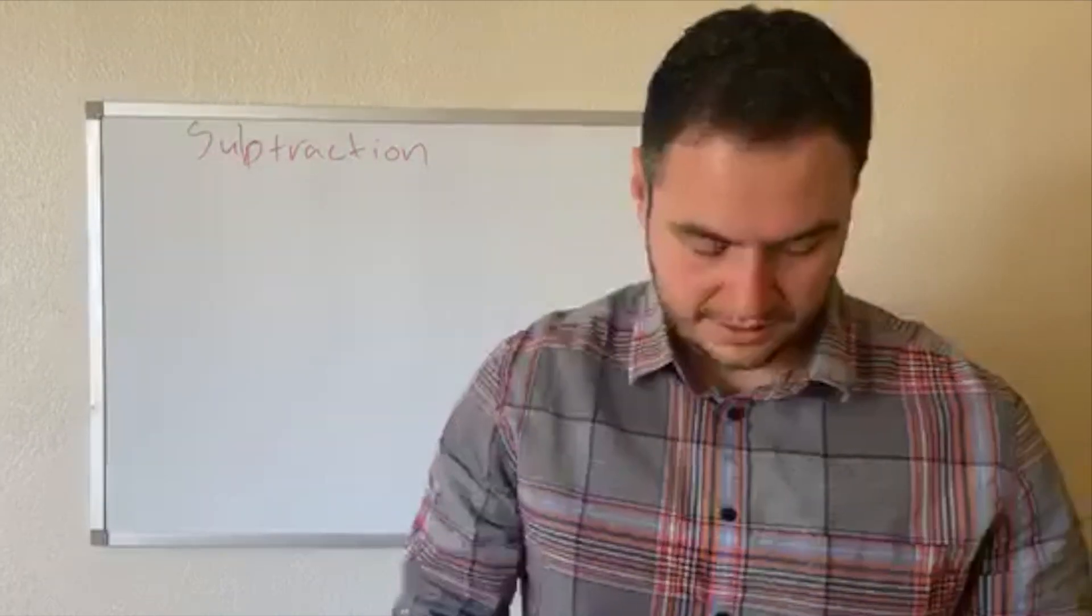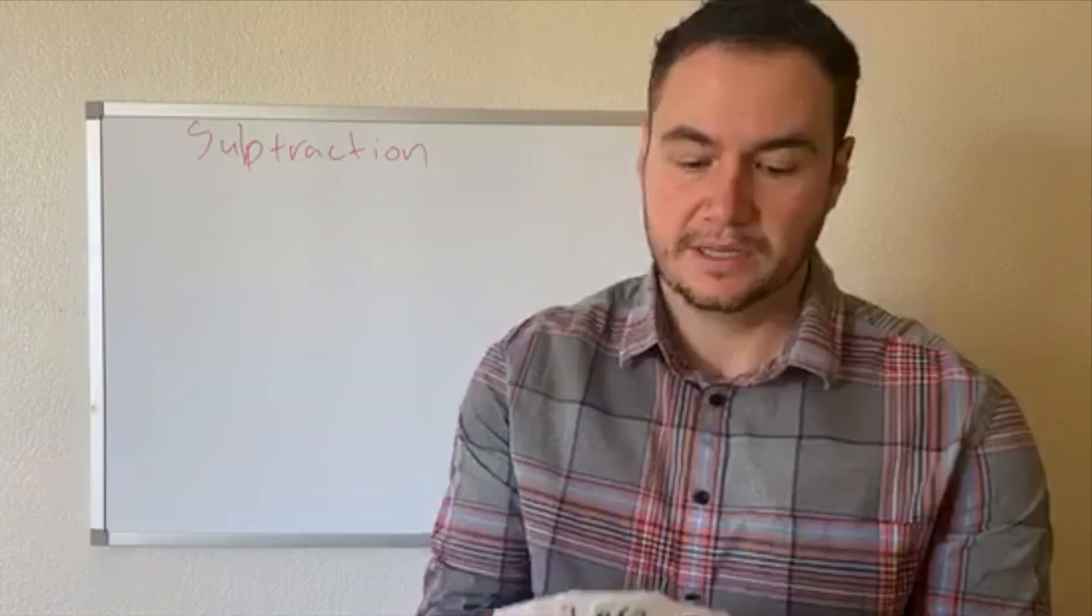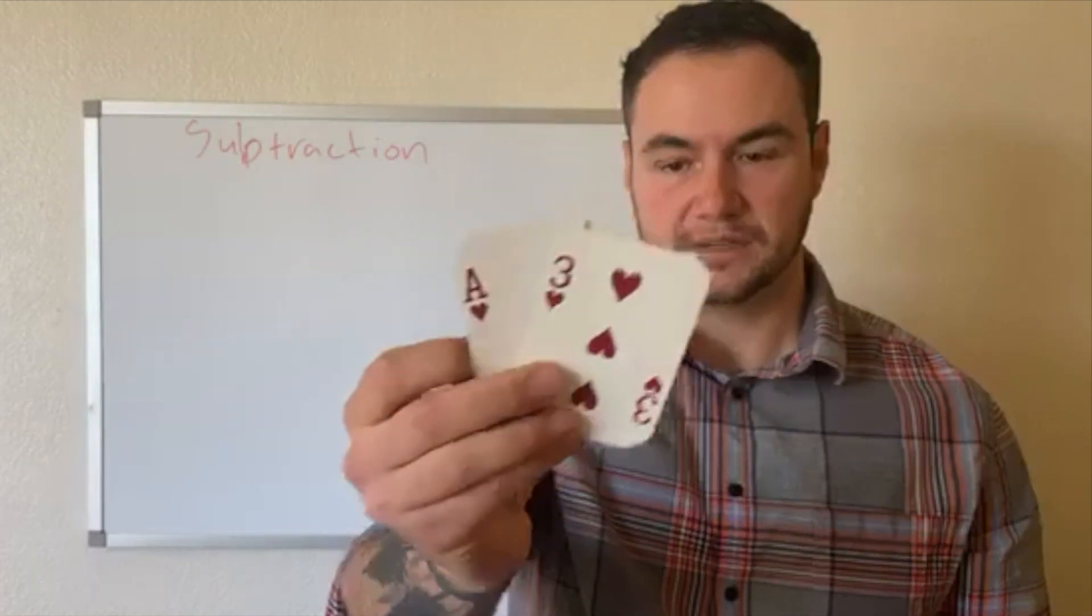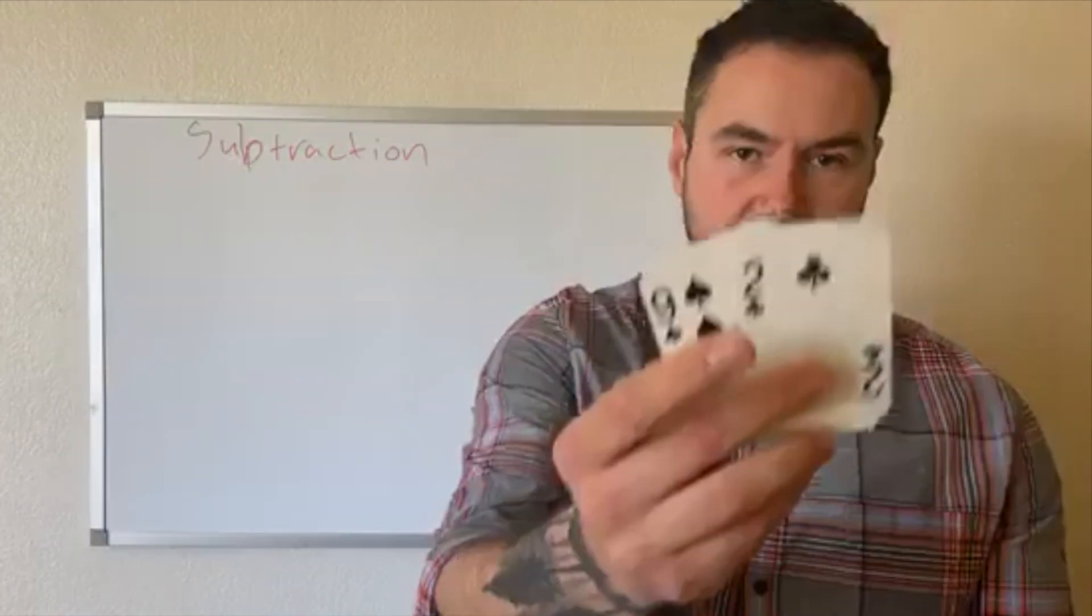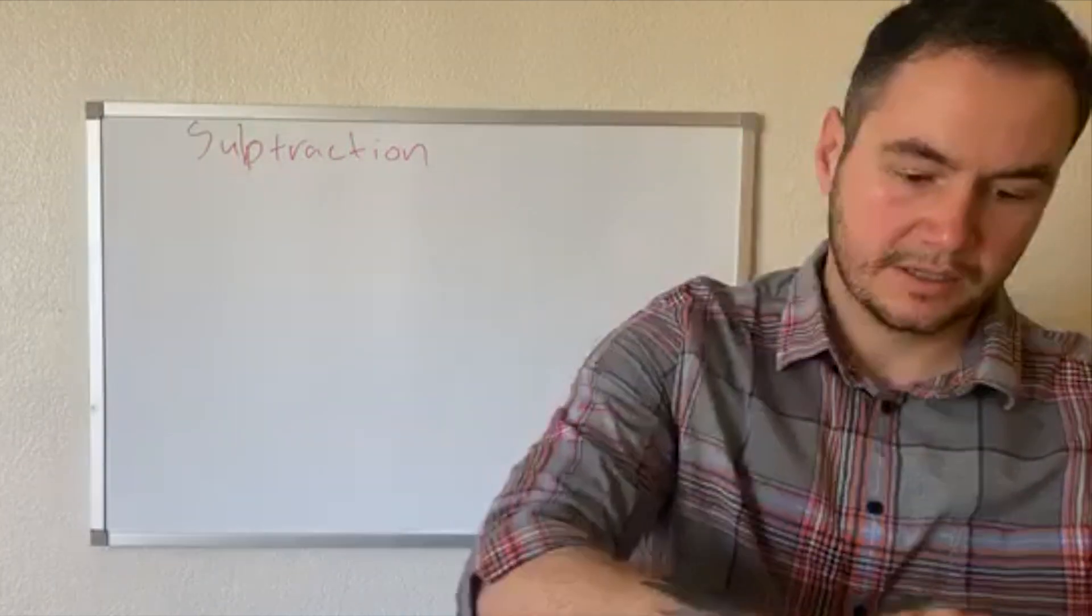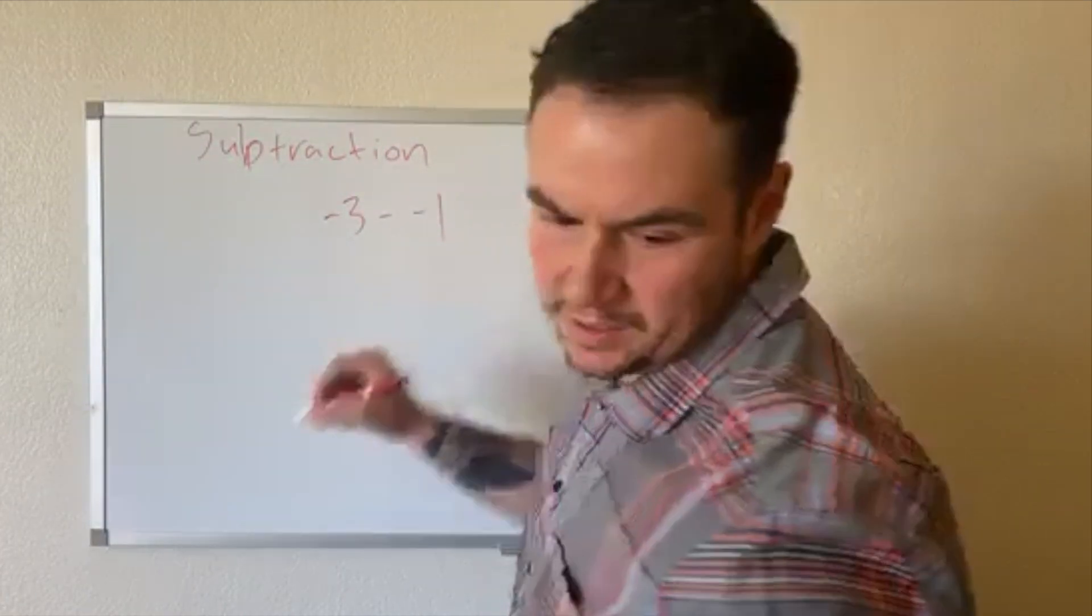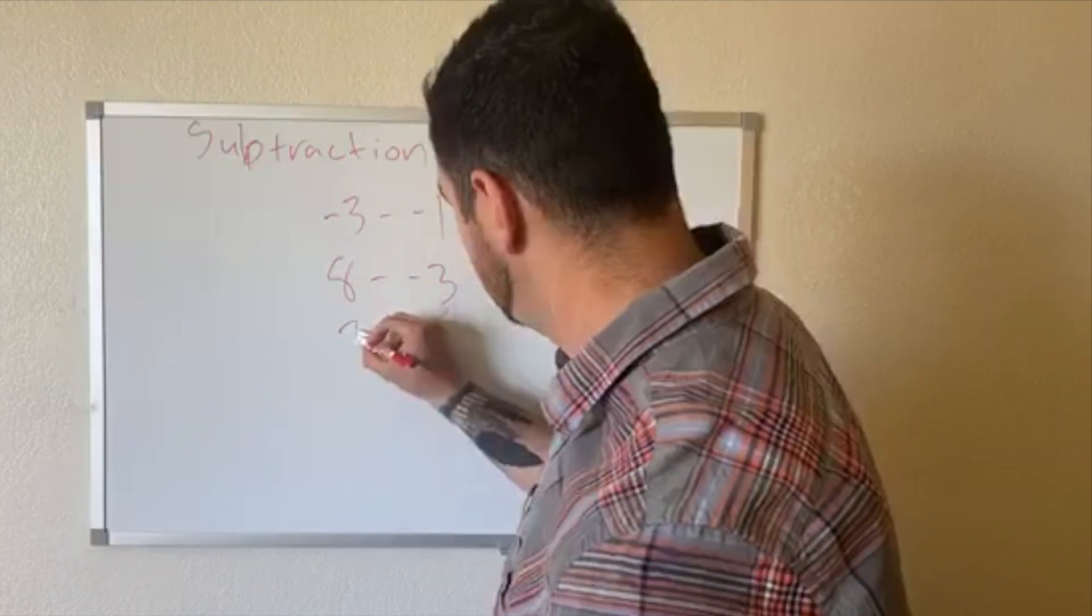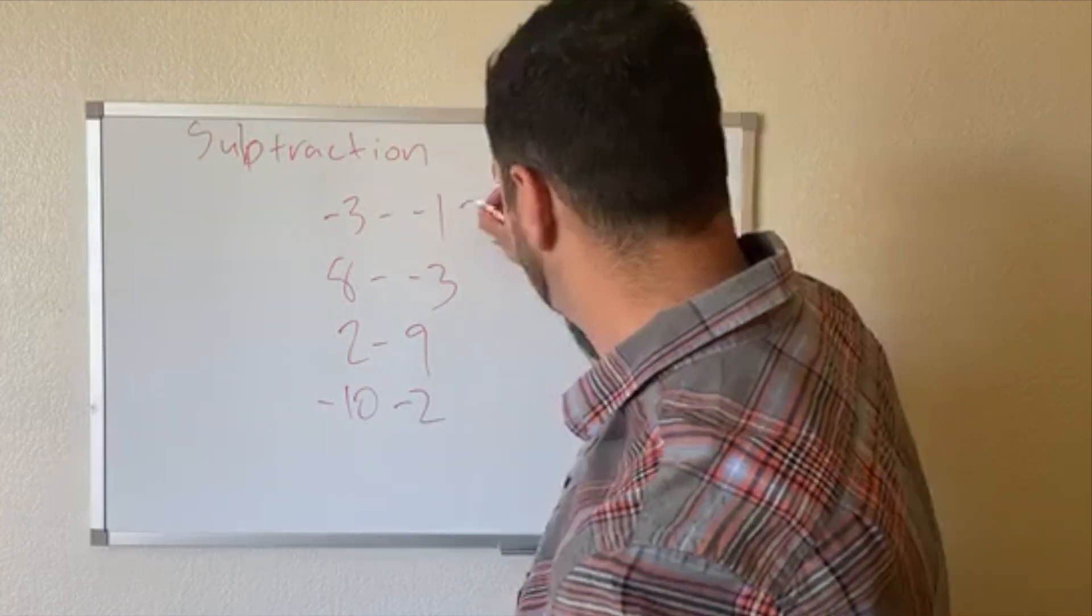So let's do some more. We're going to do another eight just to keep our minds fresh. Four, seven, eight. These two, this is subtraction. So we're going to say the card on top is the first term and the second card is the second term. First term, second term, first term, second term, first term, second term, and cha, first term, second term. So we have negative three minus negative one. We have positive eight minus negative three. We have two minus nine. And we have negative 10 minus two.